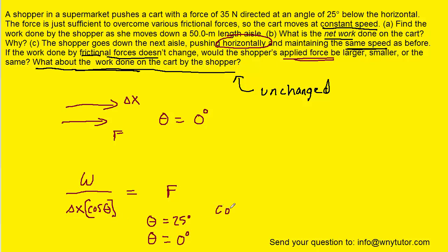We need to understand that the cosine of zero degrees is larger than the cosine of 25 degrees. And so, in part C, the cosine of the angle is going to be a larger value. But since it's in the denominator, that actually will tend to diminish the force.